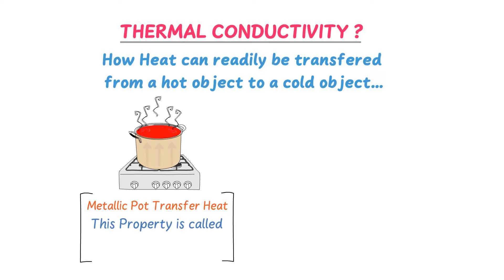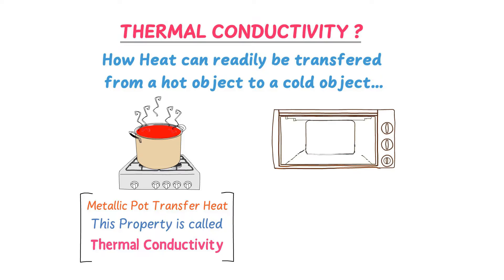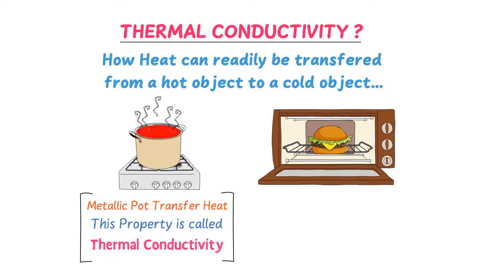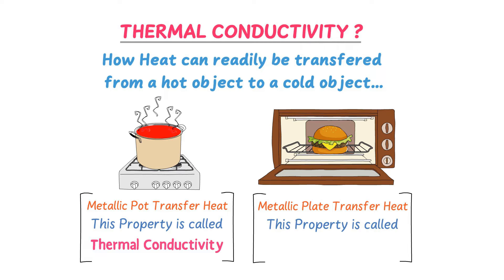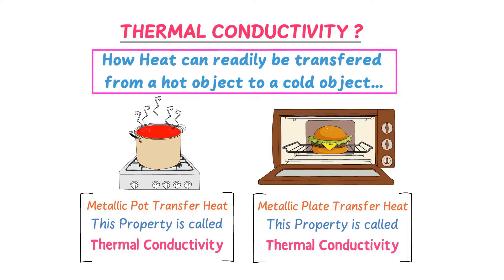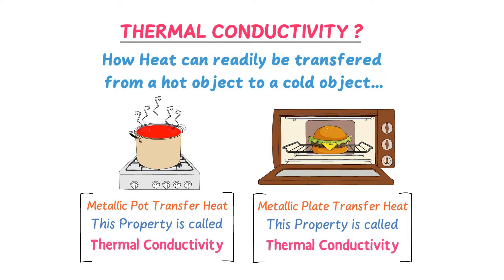This property of the metallic pot is known as thermal conductivity. Secondly, when you keep something in the microwave oven, again the metallic plate absorbs heat and transfers it to the food. So this heat-transferring property is known as thermal conductivity. Thus, thermal conductivity means how heat can readily be transferred.